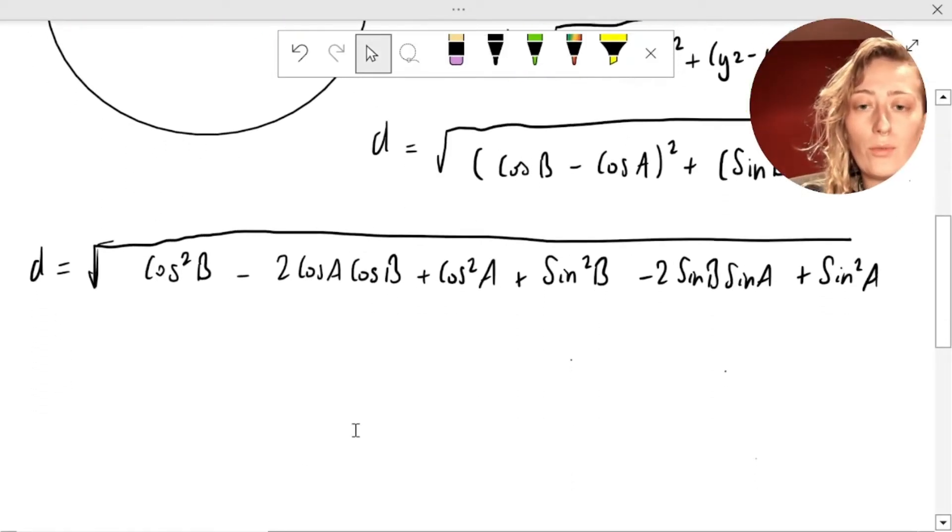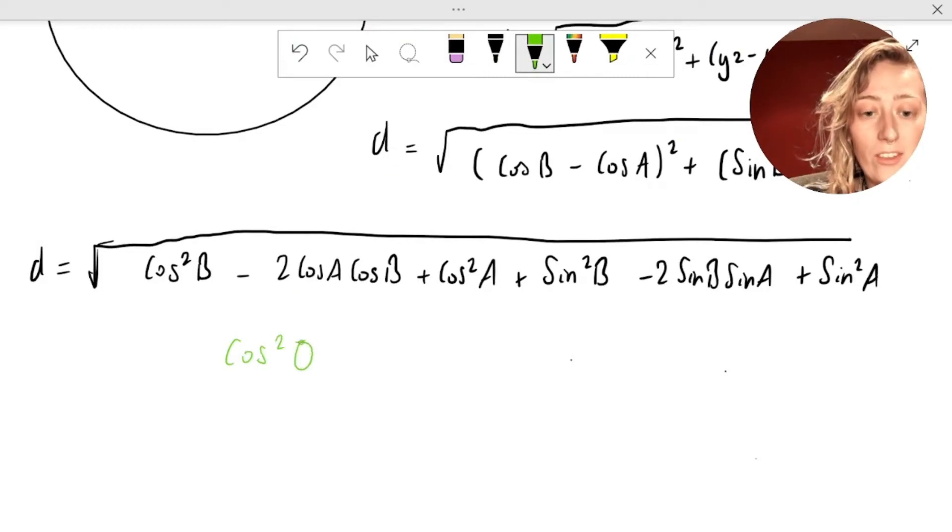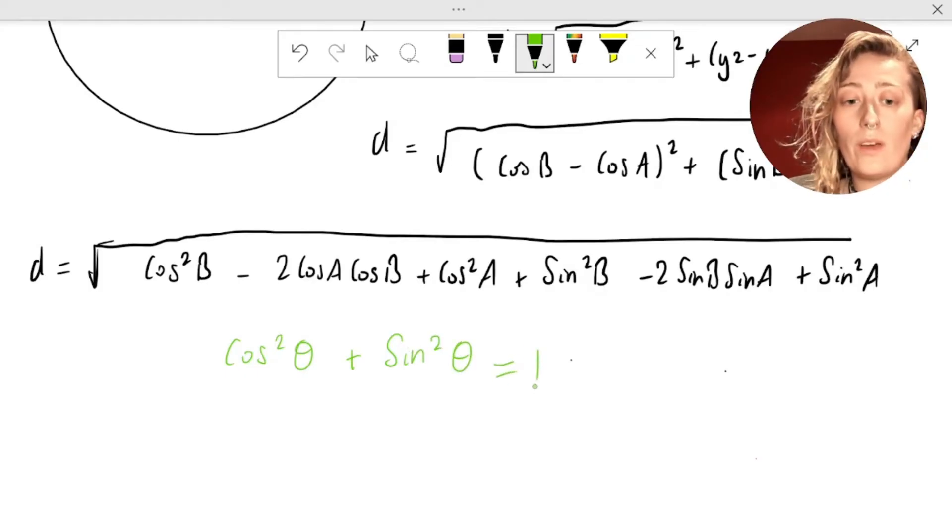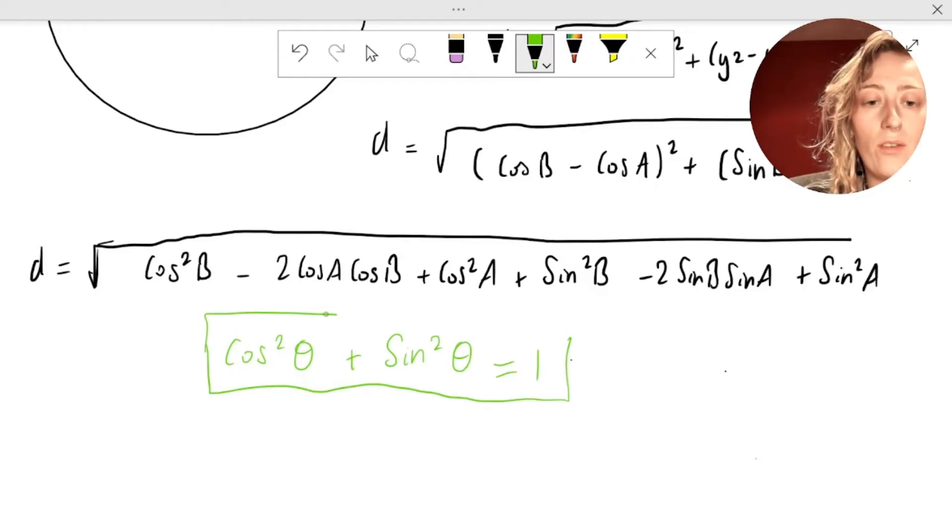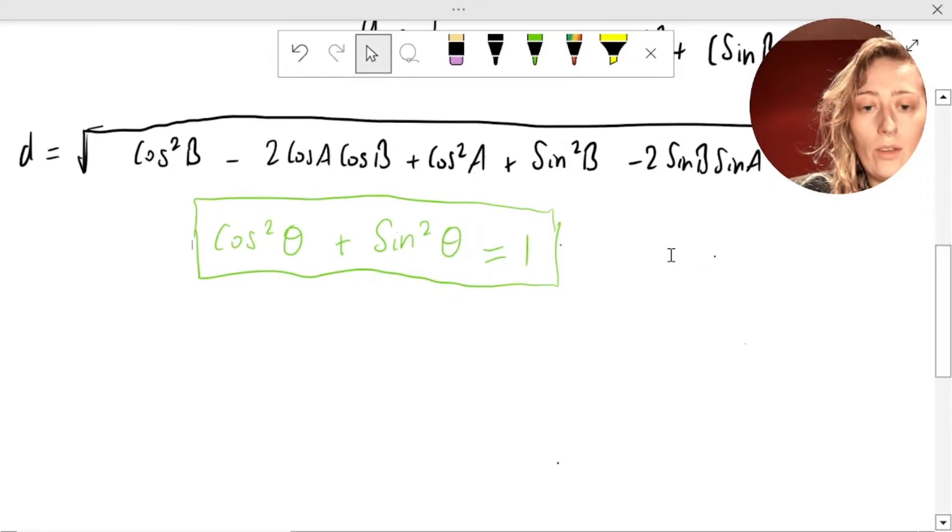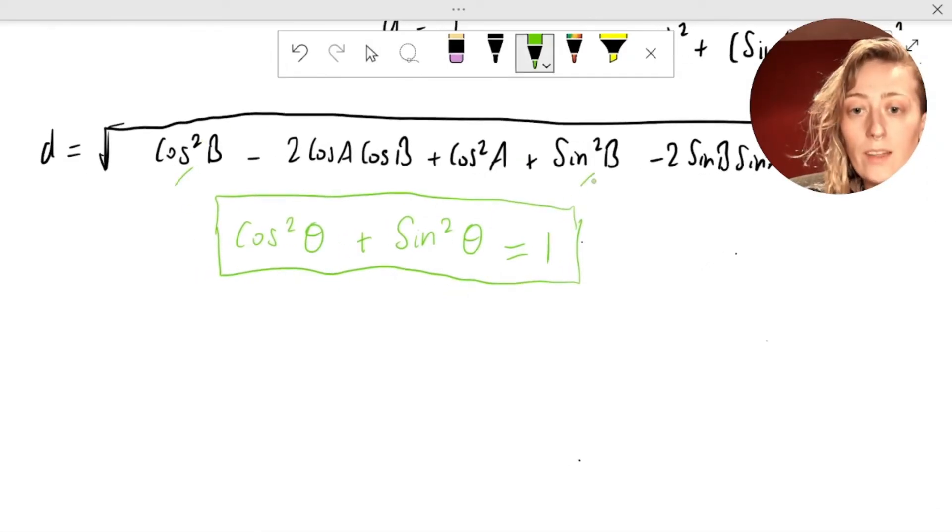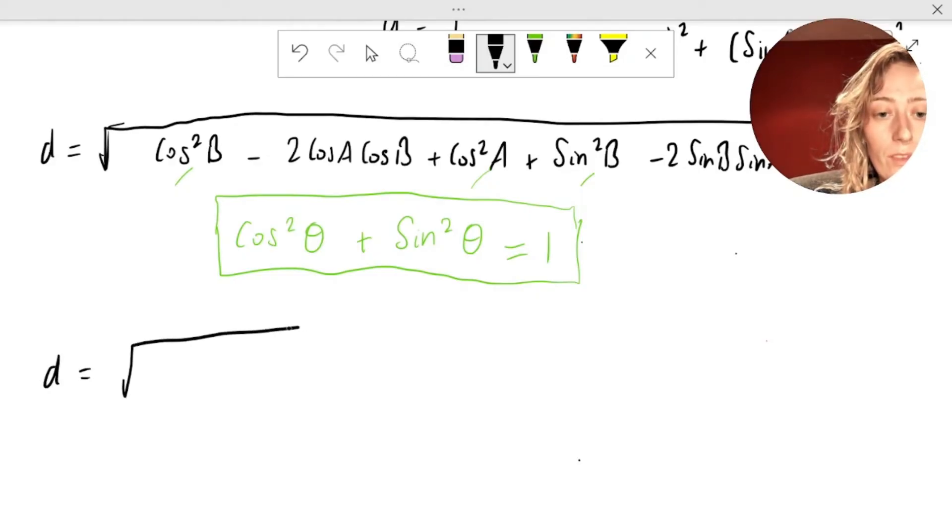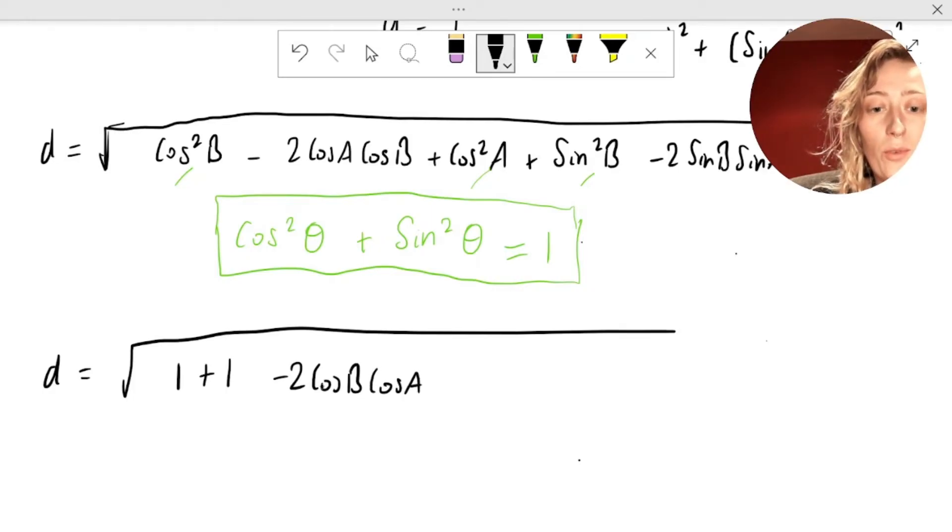So now let's use the rule that if you have the squared cos of any angle plus the sine squared of any angle theta, this is equal to 1. This is in your log tables, but I've also proved it in other videos, so check that out if you haven't already. So let's apply that. Well, we've got a cos squared B plus a sine squared B, so that's going to be equal to 1. We've also got a cos squared A plus a sine squared A, and that's also going to be 1, so we can simplify this down. Square root of 1 plus 1 minus 2 cos B cos A. So I've just switched the order of these, it doesn't matter, they're just multiplied together. 2 cos B cos A minus 2 sine B sine A.